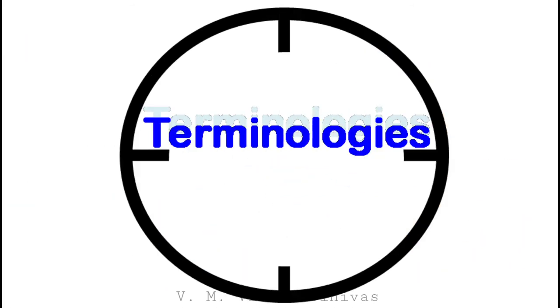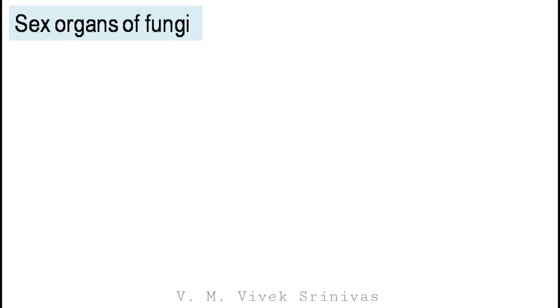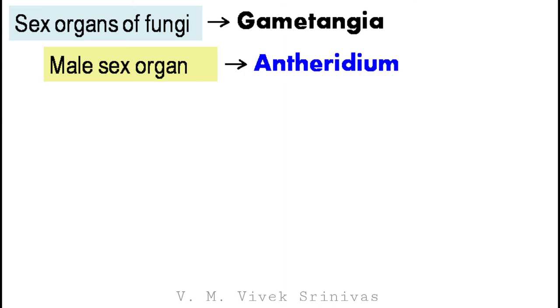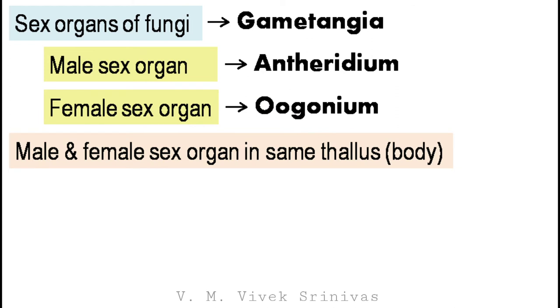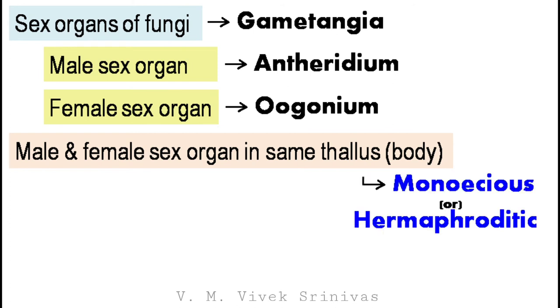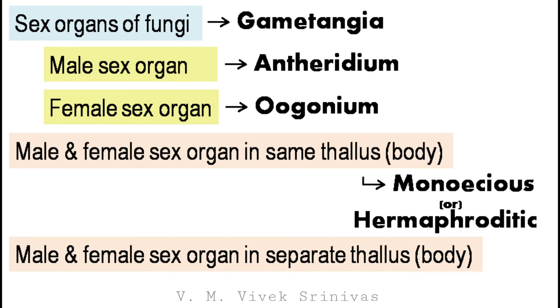Now we will see about some terminologies in fungal sexual reproduction. The sex organs of fungi are termed as gametangia. The male sex organ is termed as antheridium and the female sex organ is termed as oogonium. If the male and female sex organs are in the same body, that is in the same thallus, it is termed as monoecious or hermaphroditic. But if the male and female sex organs are in different bodies, that is in different thalli, it is termed as dioecious.